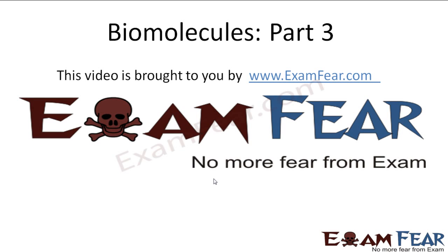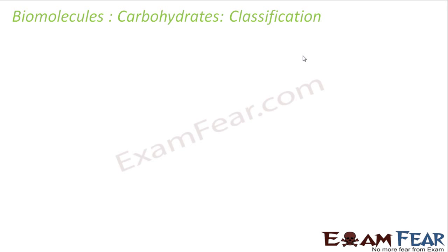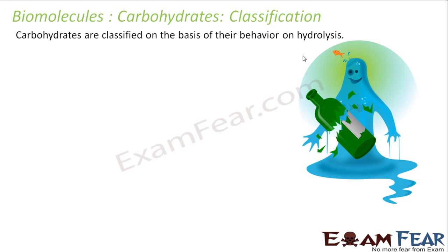Hello friends, this video on biomolecules part 3 is brought to you by examfier.com. Let's talk about classification of carbohydrates. We have just learned the definition of carbohydrates — that is, optically active polyhydroxy compounds which have aldehyde or ketone groups. Now let's understand the classification of carbohydrates on the basis of their behavior on hydrolysis, which helps us classify carbohydrates into three different categories.